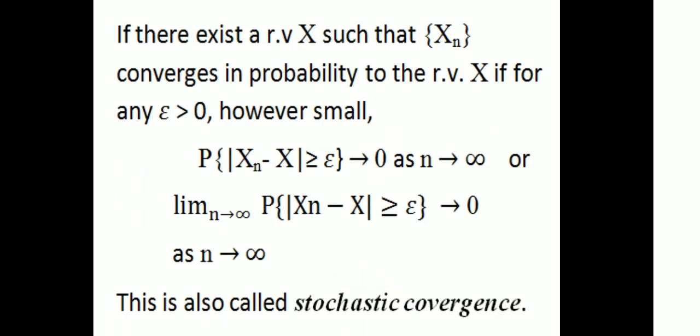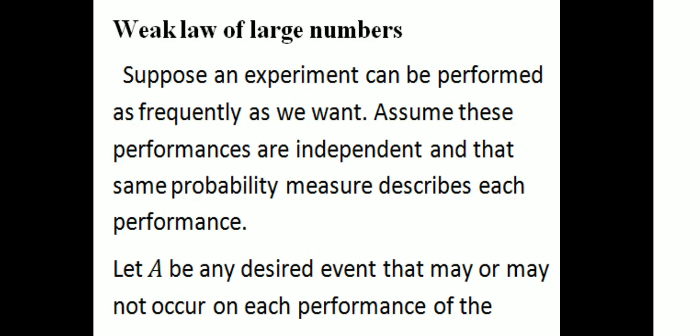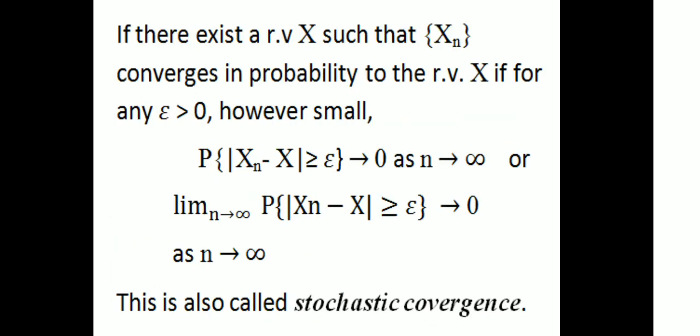If there exists a random variable X such that the sequence Xn converges in probability to X — that is, for any ε > 0, P(|Xn − X| ≥ ε) → 0 as n → ∞ — this is also called stochastic convergence. Next, the Weak Law of Large Numbers. We will discuss it in the next class.